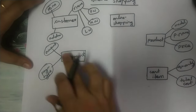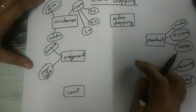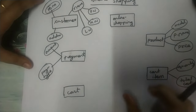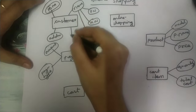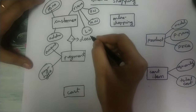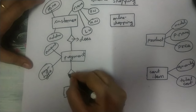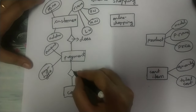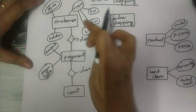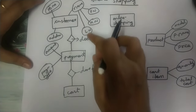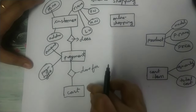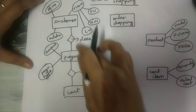Now we have to connect all the entities using a relationship — we need to draw the diamond boxes and through lines connect these entities. From customer to payment, I am going to draw a relationship, and inside this diamond box I am going to write 'does.' Then from payment to cart, I am going to connect through a diamond shape and write 'done for.' So customer does payment, and payment is done for the items that were there in the cart.